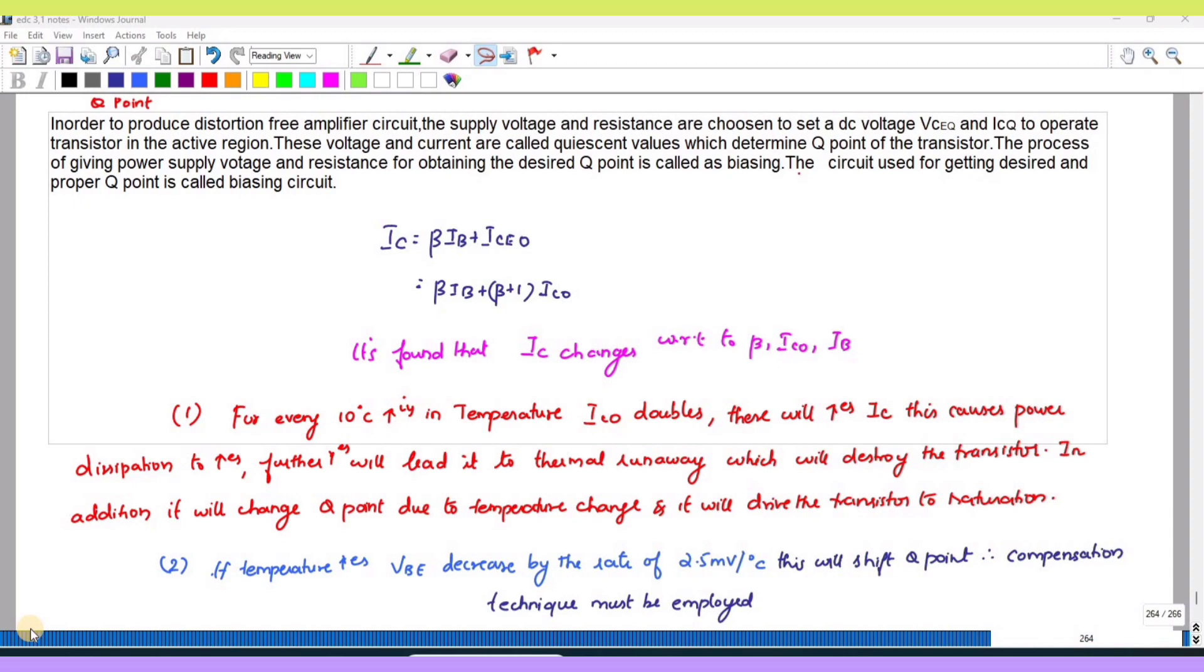For the common emitter amplifier, IC is equal to beta times IB plus IC naught. IC naught I can write as beta plus one times ICO. We can see that IC changes with respect to beta, IC naught, and IB.